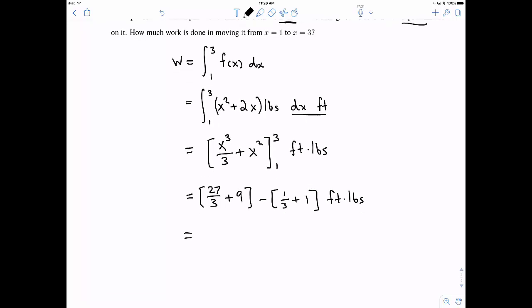And now we can simplify this a little bit. So this is going to be 9 plus another 9, so that's going to be 18. And then 1 third plus 1 is going to be 4 thirds. Subtract that away. And let's get a common denominator. And our final answer is 50 thirds, and again, our units are foot-pounds.